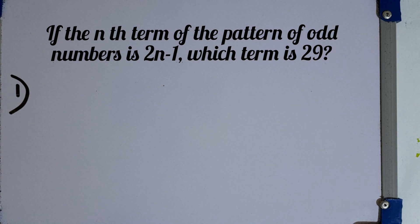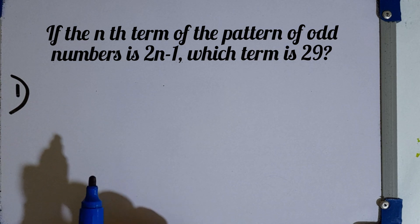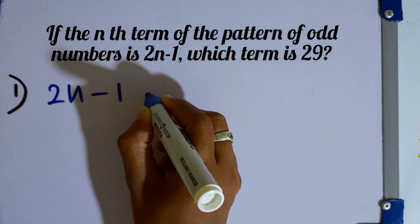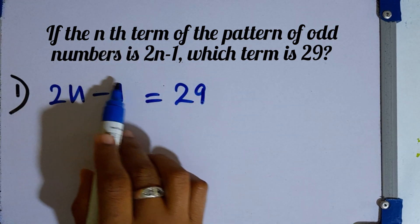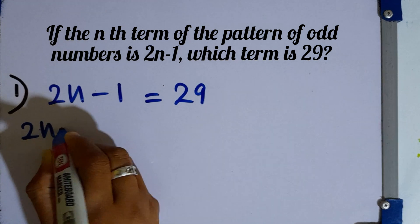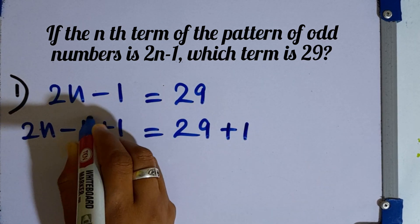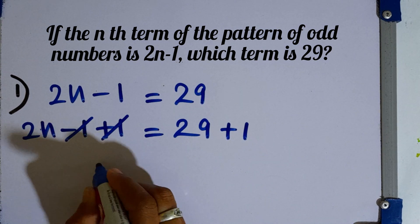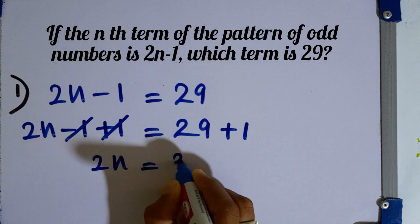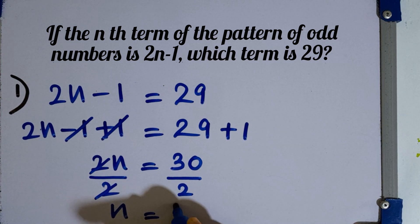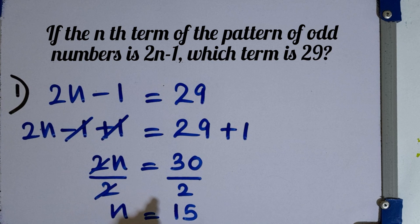Question number 1. If the end term of the pattern of the odd numbers is 2n minus 1, which odd number is 29? Let's take n equal to 29. Then 2n minus 1 equals 29. Adding 1 to both sides: 2n equals 30. Dividing both sides by 2: n equals 15. So, the 15th term is 29.